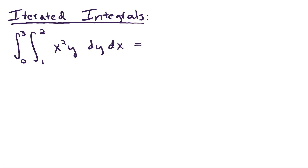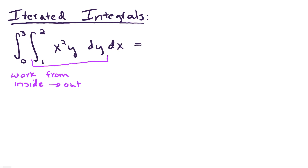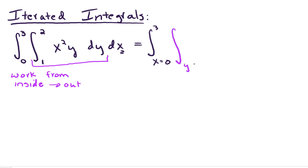A couple of things to keep in mind: you're going to work from the inside out. So we're going to start with the inside piece first. If I rewrite this integral, on the outermost layer it's an integral in terms of x, so this is x equals 0 to 3. The next integral in is from y equals 1 to 2, and our integrand is x² y dy. Then dx goes on the outside.